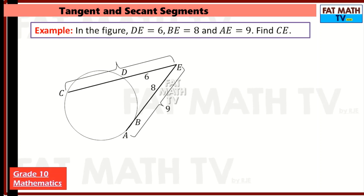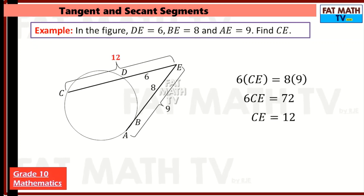In the figure, DE is 6 (external secant segment), BE is 8 (external secant segment), and AE is 9 (the whole secant segment). Find CE. The product of 6 and CE equals the product of 8 and 9. So 6 times CE equals 72, and 72 divided by 6 is 12. CE is 12 units.